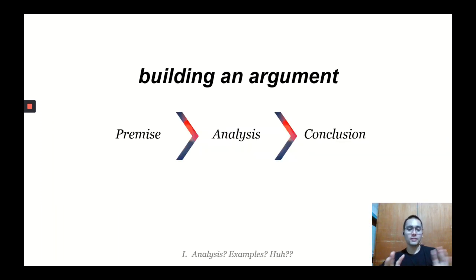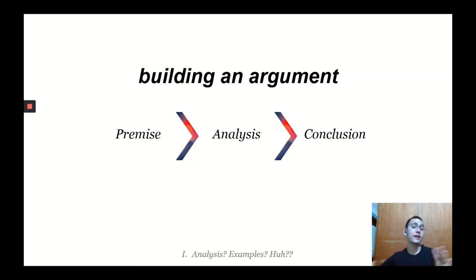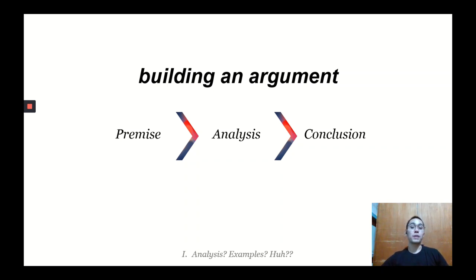This is the basic template of what an argument looks like. It starts with a premise, an analysis, and a conclusion. Anything that has any of these three things is generally already an argument. An argument doesn't have to be pragmatic or principled — it's just anything that contains any of these three things.